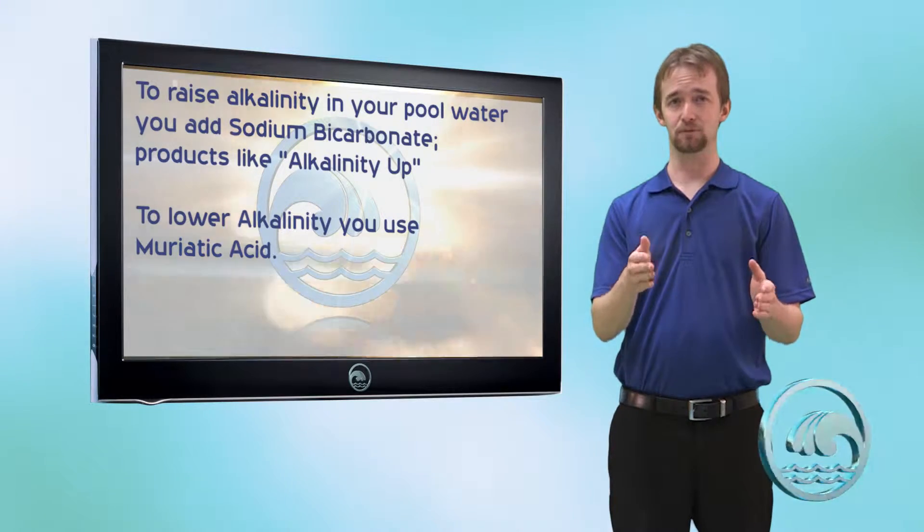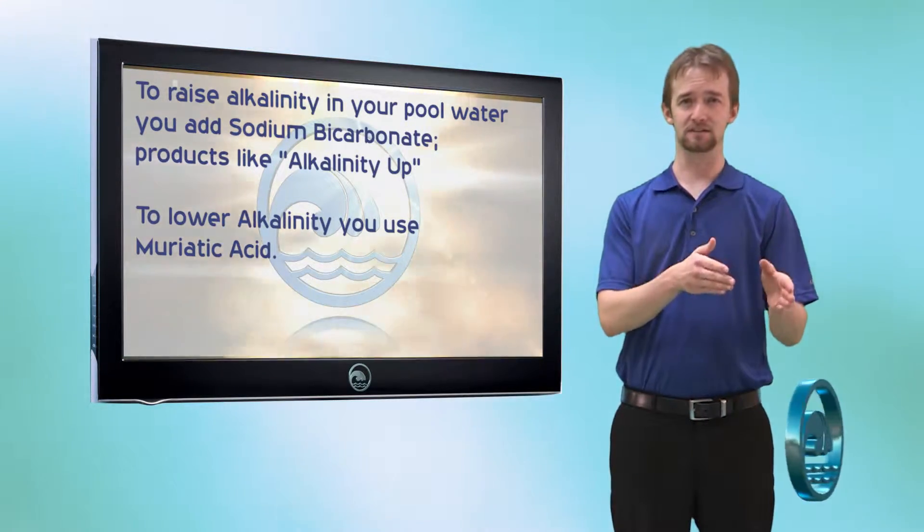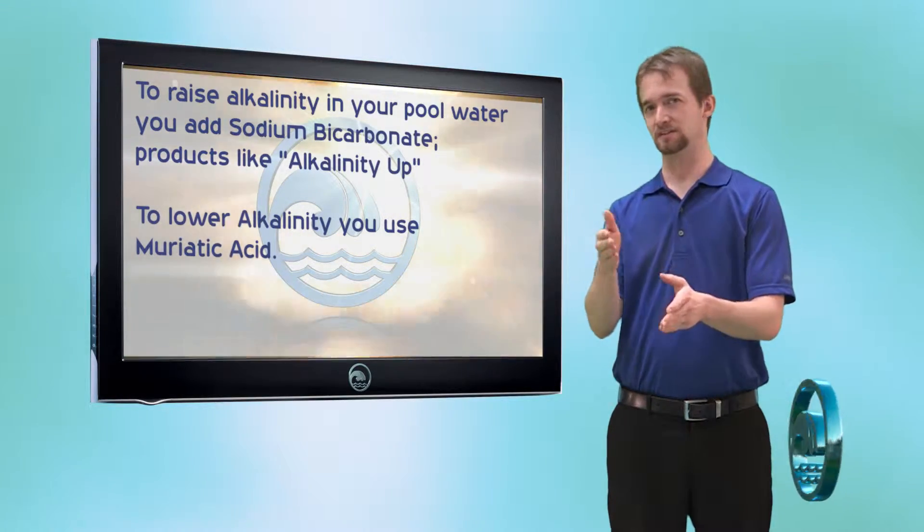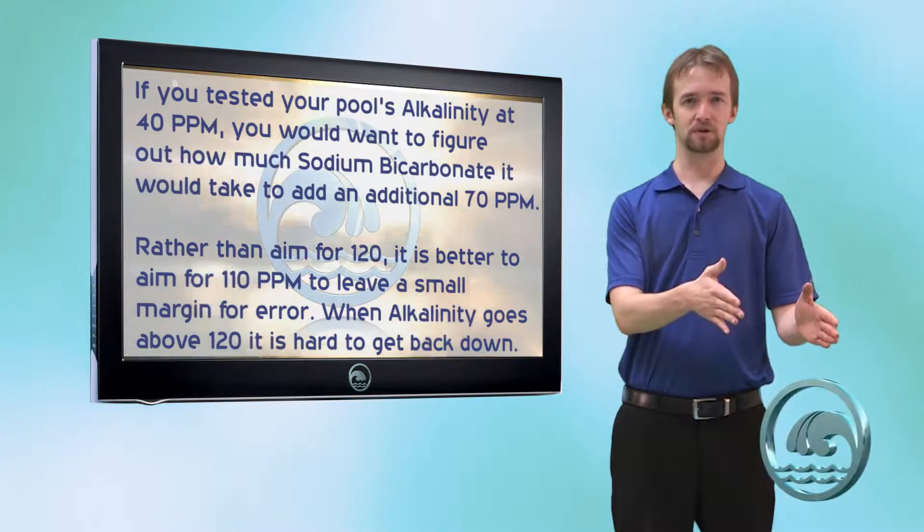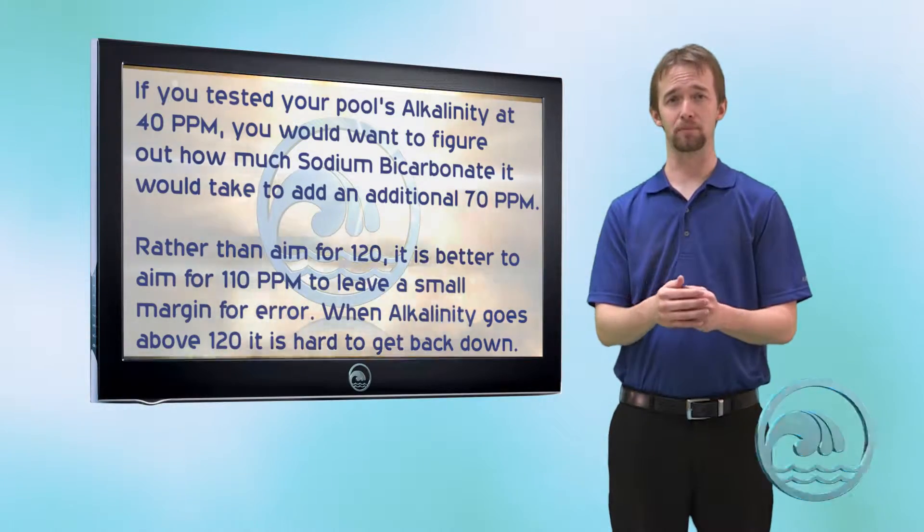When we balance alkalinity, we want to shoot for the higher end of the range. So if you test your alkalinity and it's 40, we want to get up to between 100 and 120, say 110. So if your alkalinity tests at 40 parts per million, you need to add 70 parts per million to get it into proper range.